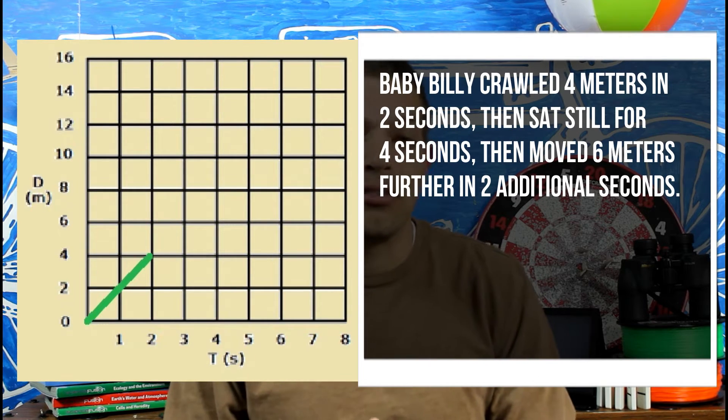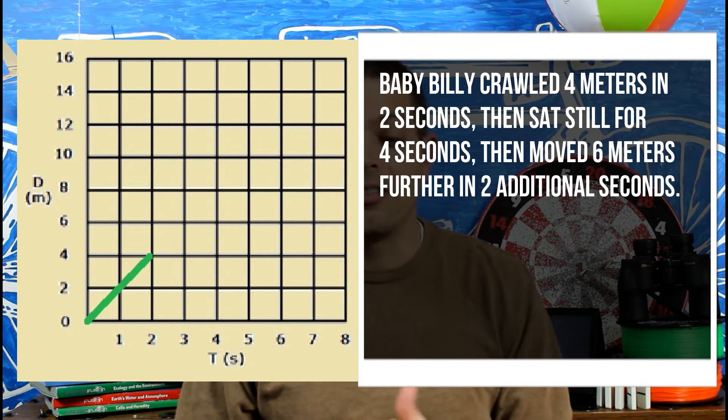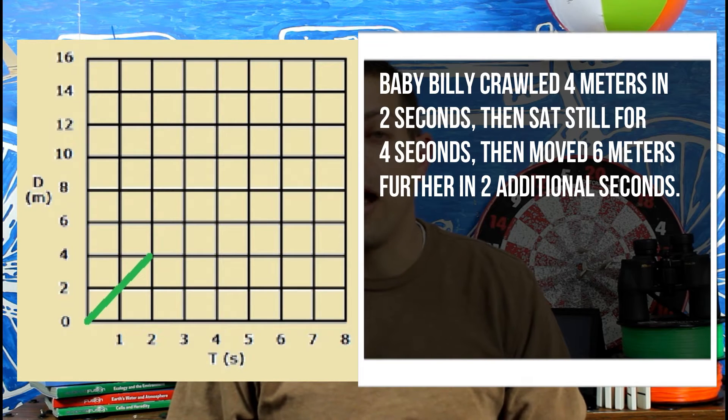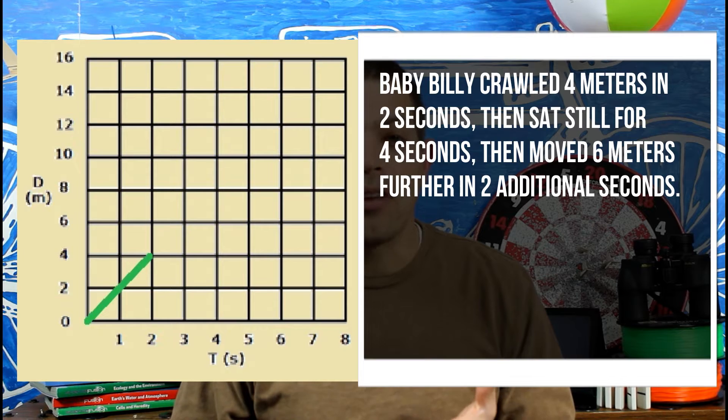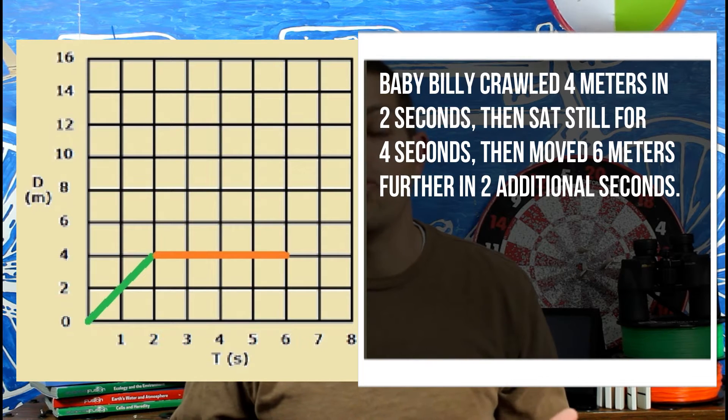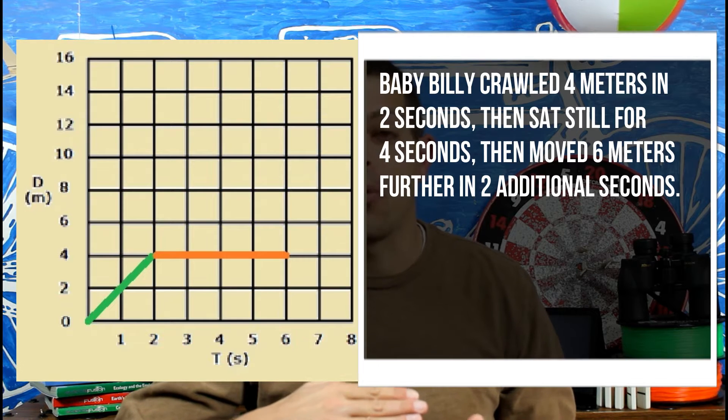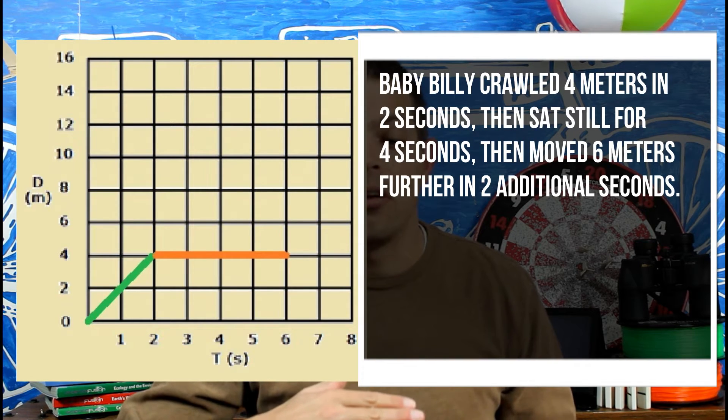Now, the thing that kind of shows you a little bit about velocity here on this graph is where he sat still for four seconds. How do we show that on this graph? Think about it. He's at four meters when he stops moving and he stays there. So that line is horizontal. It doesn't move. So a horizontal line on a graph of distance over time or a graph for velocity shows no movement.